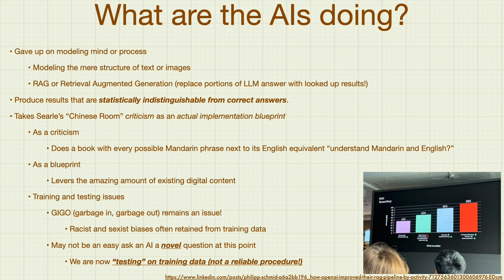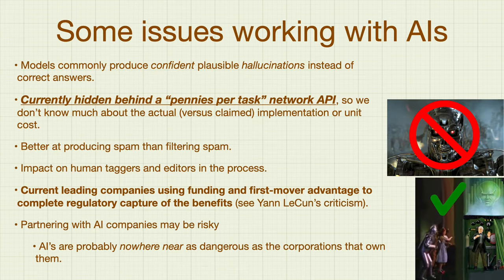Some things still apply though they don't say them anymore. GIGO — garbage in, garbage out — still applies. These AIs notoriously retain gender and racial prejudices from their training data. And it may no longer be easy to give an AI a novel question — if you've thought of a 'Captain Kirk trick the AI' question, somebody's already asked it, written it down, and if it didn't do well, they've tried again. So there are some issues working with AIs.